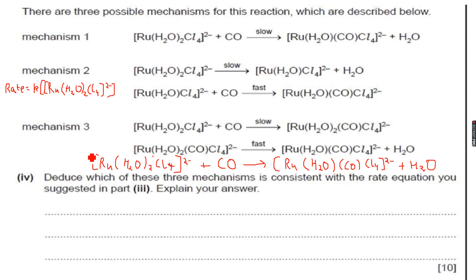Because we have to use double square brackets, because concentration, and then for the complex we also have square brackets. RU, H2O whole twice, Cn 4 to negative. It's only for the first reactant. The order with respect to CO, we can see it is zero, because there is no CO in the rate equation, there is only this complex ion of ruthenium.